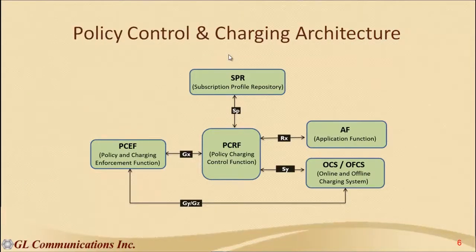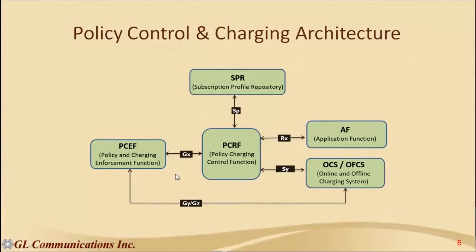The next important aspect of IMS network is Policy Control and Charging. It is the ability to distinguish between services and apply charging differently for each. For example, the network must allow high quality of service for voice and apply a different charge for it. The PCRF is the central part in the PCC architecture. It selects and provides applicable policy and charging decisions to PCEF, enabling operators to offer differentiated services and apply premium charges. The Application Function determines the required quality of service and provides service data flow information to PCRF.